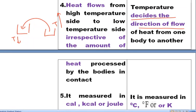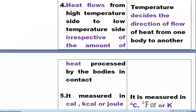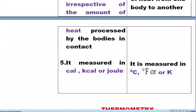Heat energy may be measured in calories, kilocalories, and joules. But temperature may be measured in degrees Celsius, degrees Fahrenheit, or Kelvin. These are the basic differences between heat and temperature. Sometimes students get confused between the two, hence this explanation.